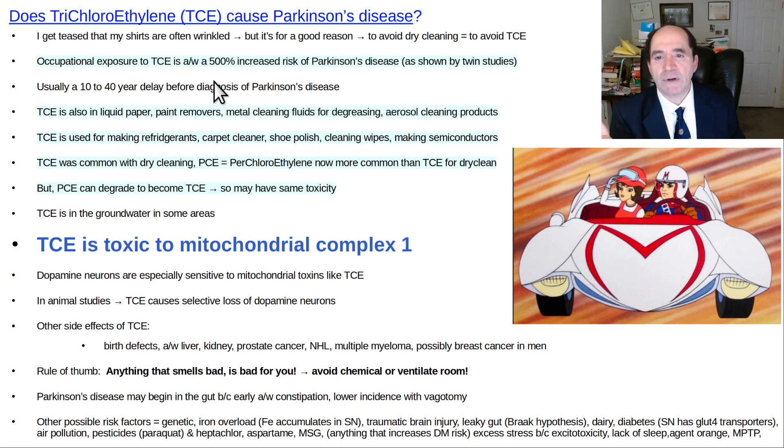Chronic occupational exposure to trichloroethylene, TCE, is associated with a 500 times increased risk of Parkinson's disease. And they figured it out from looking at twin studies. Usually there's a delay 10 to 40 years before the diagnosis of it. Somebody's working with this stuff when they're a teenager, they're going to be relatively young when they get Parkinson's.